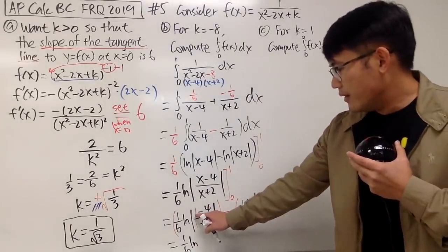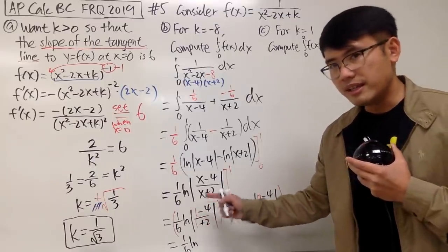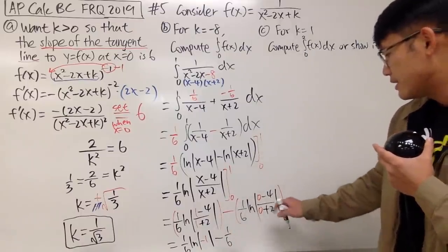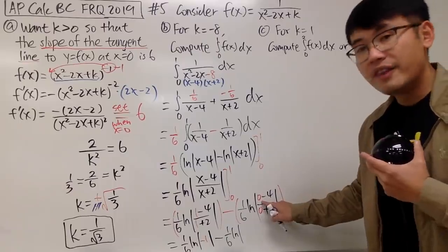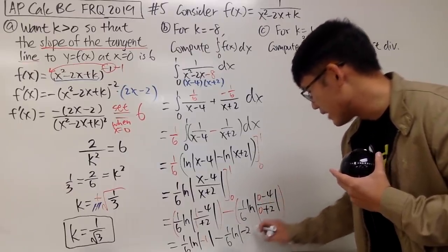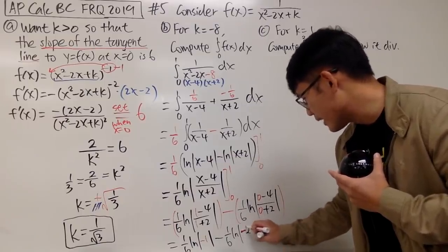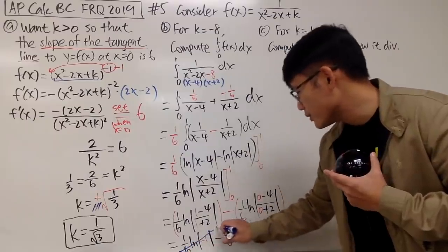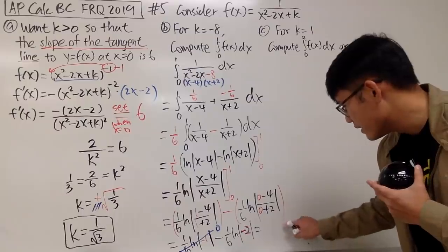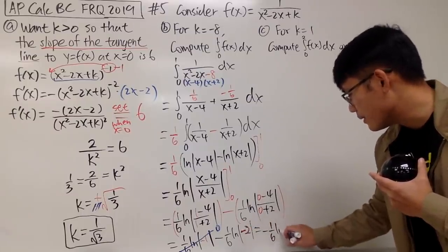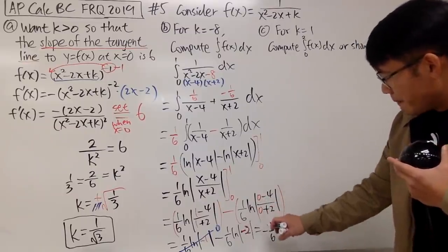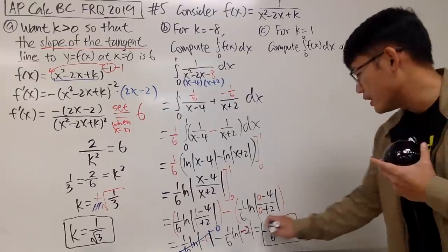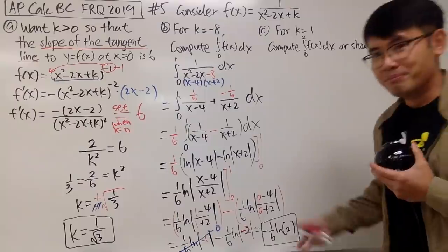Putting in 0 and 1: at x equals 1, we have 1 minus 4 equals negative 3, and 1 plus 2 equals 3, so the absolute value of (negative 3 over 3) equals absolute value of negative 1, which gives natural log of 1, that's 0. At x equals 0, we have negative 4 over positive 2, which is negative 2, so absolute value gives 2. All in all, the first term is 0, and we subtract (1/6) natural log of 2. So the answer is negative (1/6) natural log of 2, which you can also write as (1/6) natural log of 1/2.